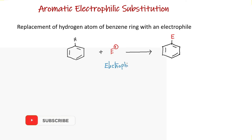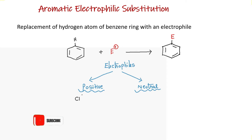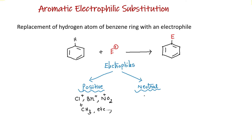Generally, electrophiles are of two types: positive electrophiles and neutral electrophiles. Positive electrophiles include cations like Cl+, Br+, NO2+, and all alkyl carbocations. Neutral electrophiles include Lewis acids like aluminum chloride, boron trifluoride, and molecules with multiple bonds like SO3, carbon dioxide, etc.